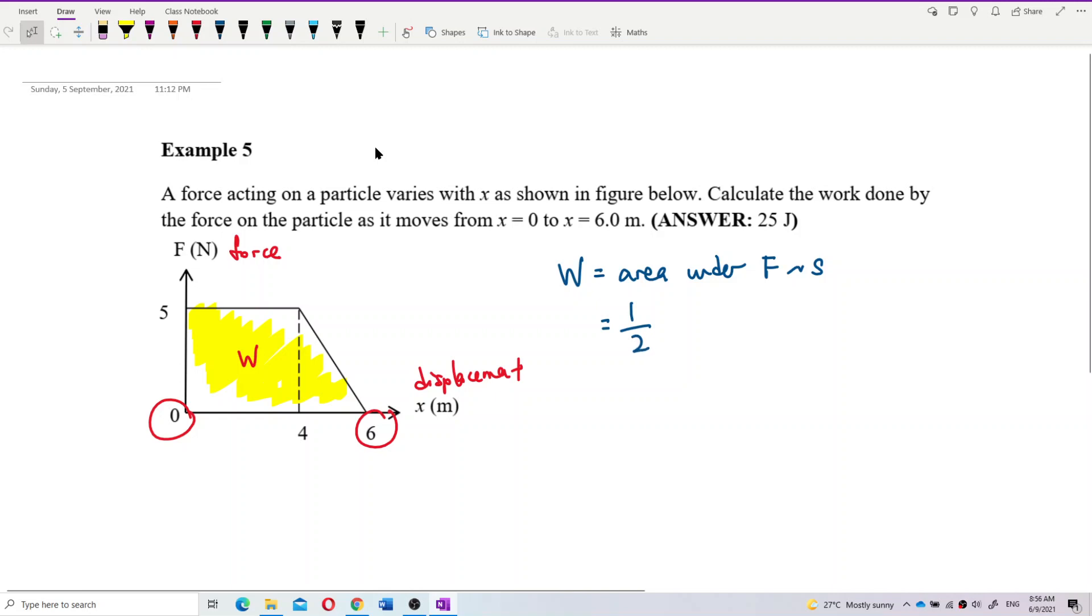Half times, first of all times with the height. Height of trapezium is 5, and then plus, and then multiply by these two parallel surfaces added up together. So this part is 4 meters and the long part is 6 meters, so it is 4 plus 6.